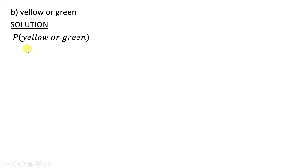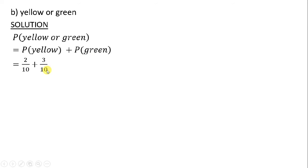Find the probability of picking a yellow or green counter. We find the probability of picking a yellow counter plus the probability of picking a green counter. We have 2 yellow counters and 3 green counters, with total possible outcomes of 10. So 2 over 10 plus 3 over 10 gives us 5 over 10. Taking this to its lowest terms gives us one half.